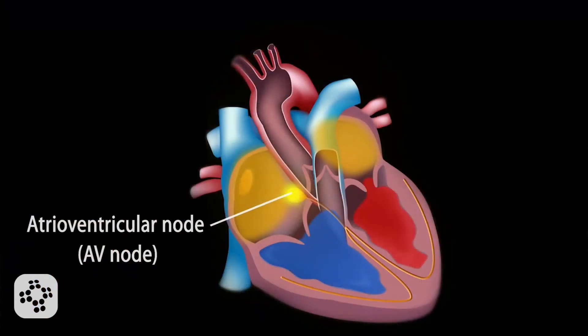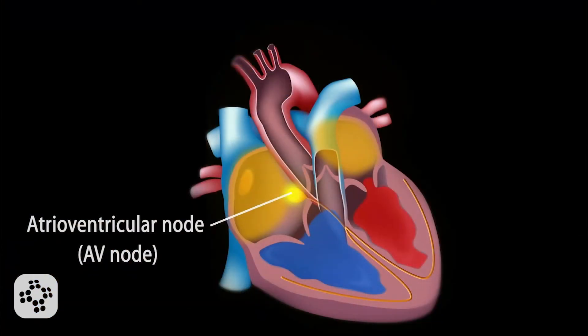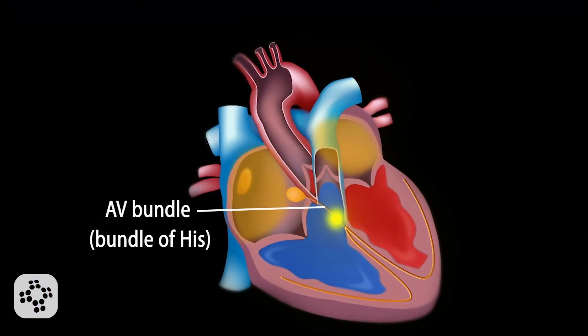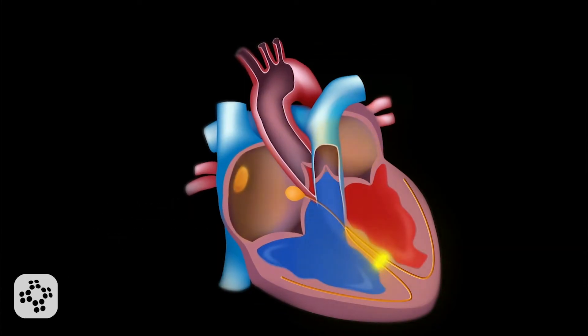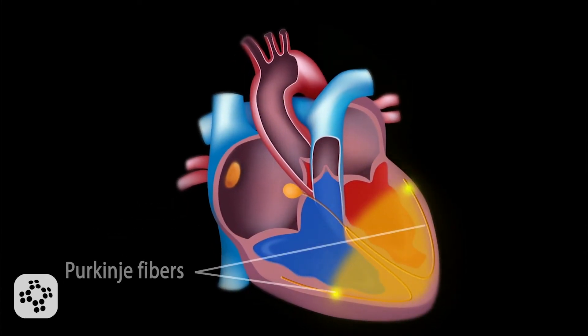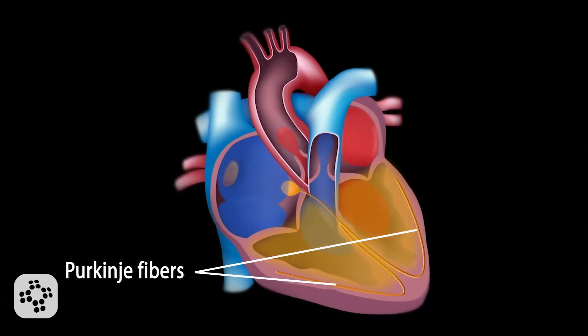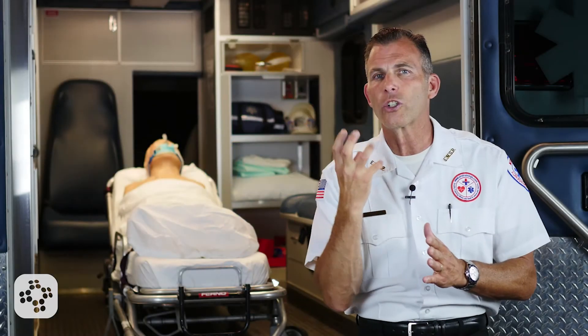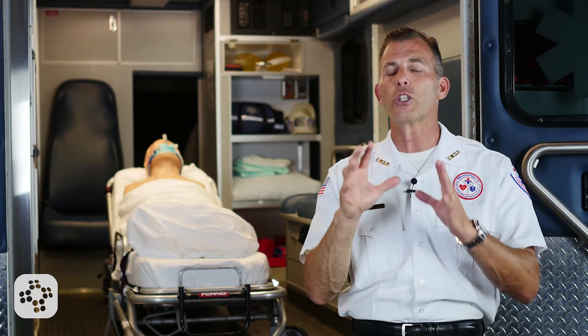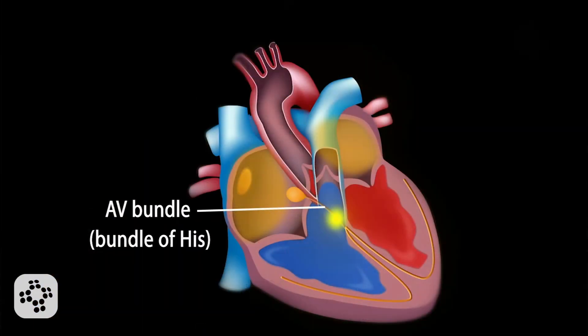The impulse generated from the AV node then travels through the bundle of His, which is the route the impulse travels to reach the Purkinje fibers that wrap around the ventricles. This ventricular contraction then circulates the majority of the oxygenated blood throughout the body. The bundle of His is the route of electrical transmission that travels between the atria and the ventricles.